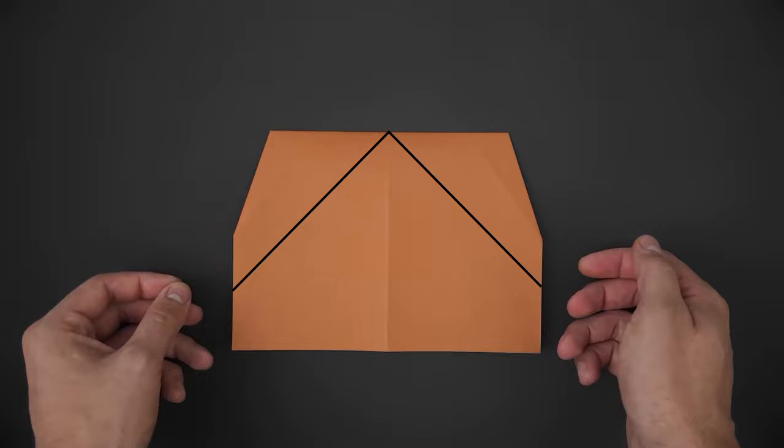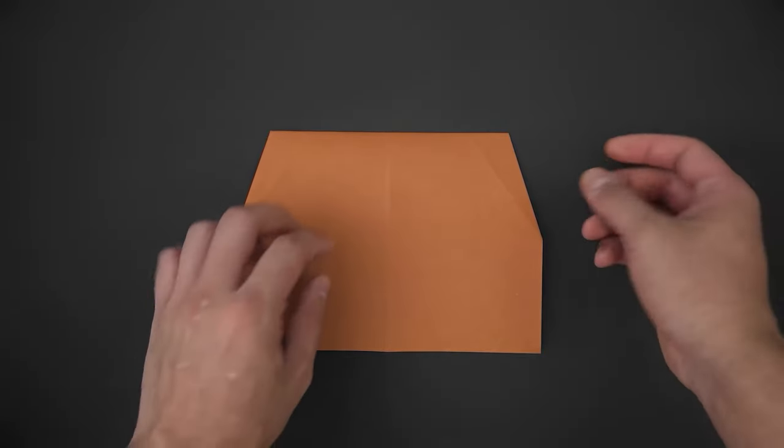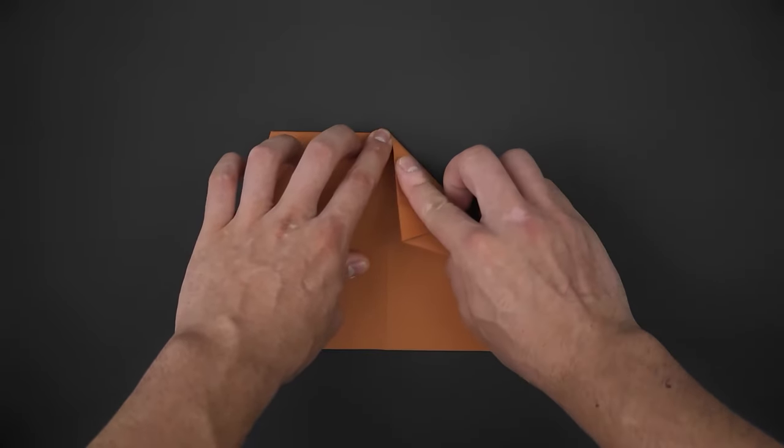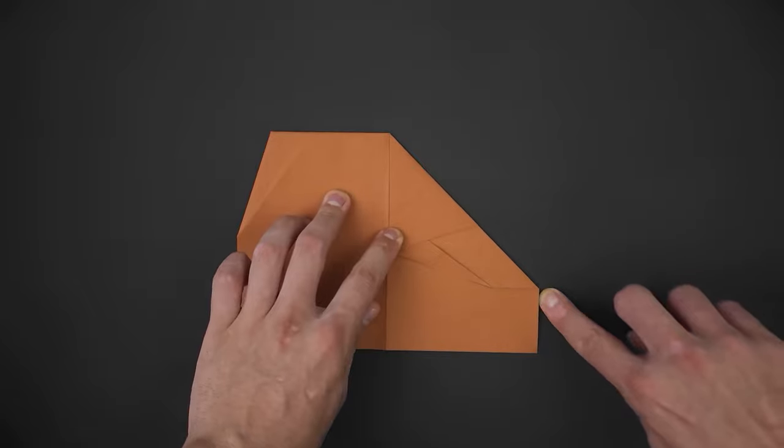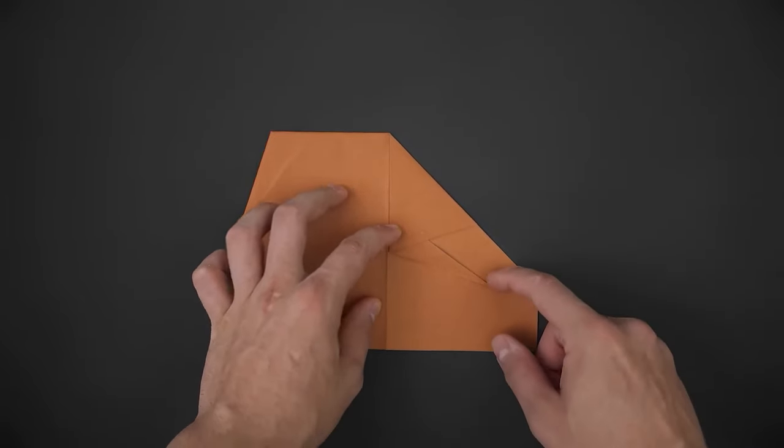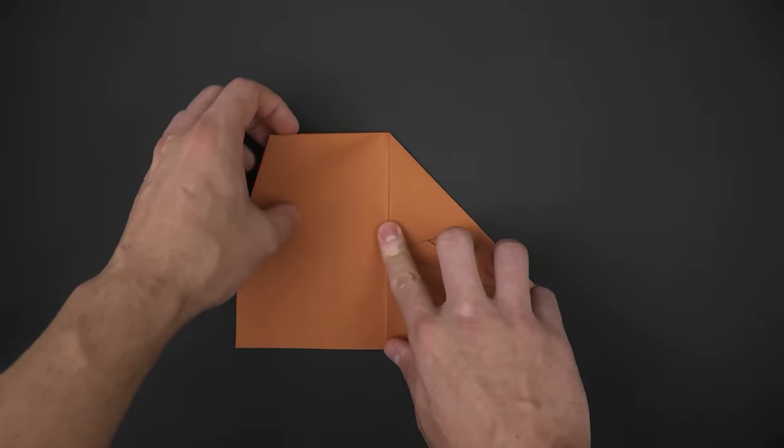Now let's fold these two diagonals. To do this, let's bring half of the top side to the middle. And then repeat the same with the other side.